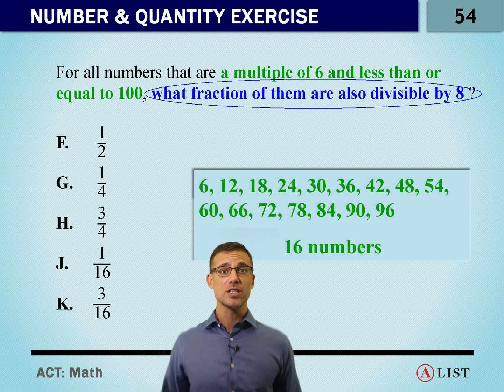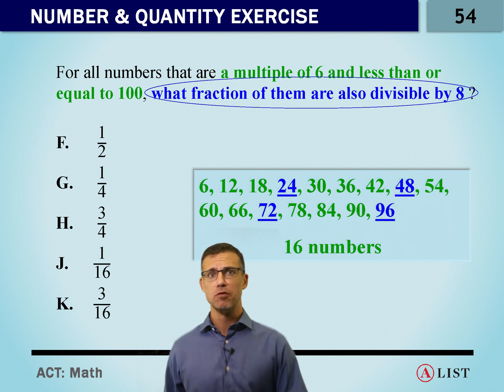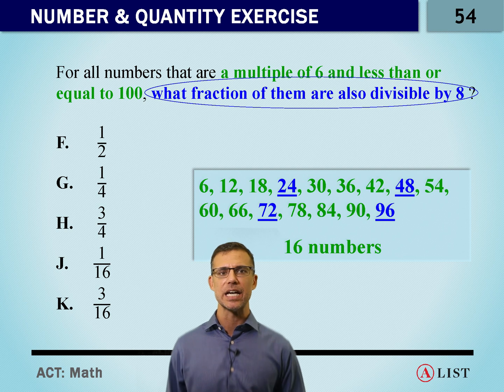So now out of our 16 numbers, how many of them are divisible by 8? We've got 4: 24, 48, 72, and 96.